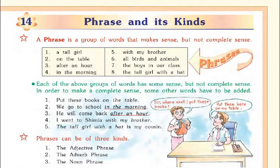Each of the above groups of words has some sense. For example, 'a tall girl' means something — you know it well — but not complete sense. Each of the above groups of words has some sense but not complete sense.